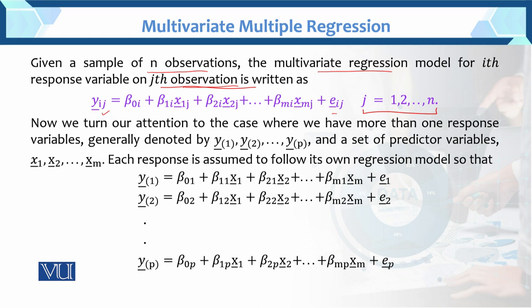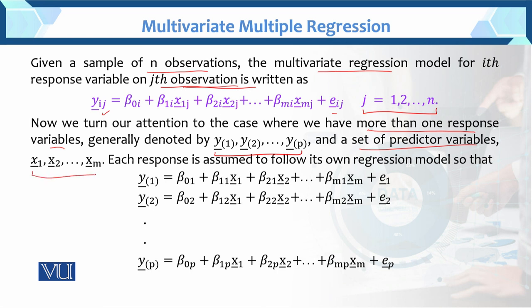Now we turn our attention to the case where we have more than one response variable — more than one dependent variable. Generally denoted by y1, y2, y3, up to yP, because P models will be generated. And a set of predictor variables x1, x2, up to xm. Each response variable is assumed to follow its own regression model. So we have a general layout with y'1, y'2, up to yP as response vectors.